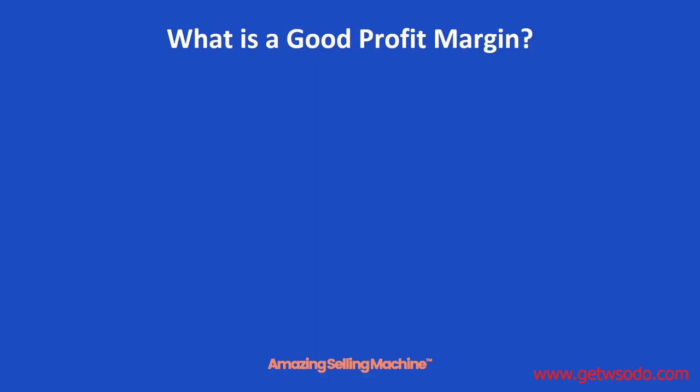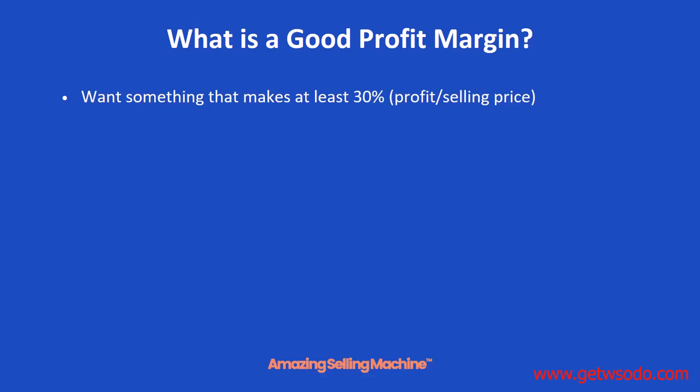While some large companies out there are perfectly fine with a 10% profit margin, in this business we try to shoot for something around 30%, and you get that by taking your profit and dividing by the selling price. A really good profit margin is 50% or higher, and it's definitely obtainable, but probably not for your first product — maybe for your second or third product, once you've established your brand and really know this business.